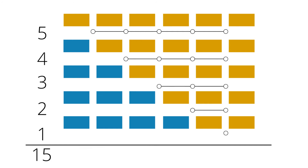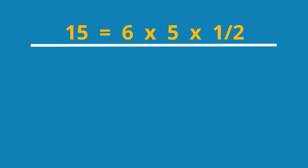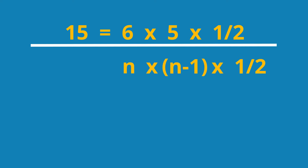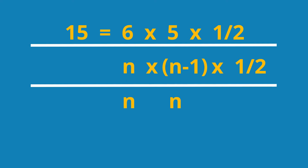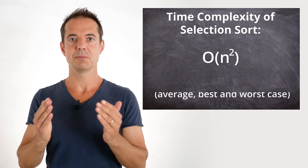We can also calculate that: 6 elements times 5 steps divided by 2, since on average half of the elements are searched. 6 times 5 is 30, divided by 2 is 15. If we replace 6 by n, we get n times (n minus 1) times one half. It is enough for us to see that the term contains n times n — therefore, in the final term, n squared. That means the time complexity of selection sort is O(n²), and that in the average, best, and worst case.